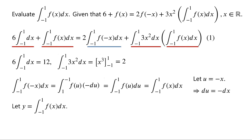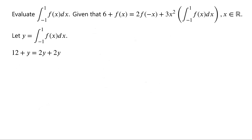Now we let y equal the integral of f of x dx from negative 1 to 1. Then the identity can be written as 12 plus y equals 2y plus 2y. Rearranging the equation, we have 3y equals 12. So y equals 4. Thus, the integral of f of x dx from negative 1 to 1 equals 4.